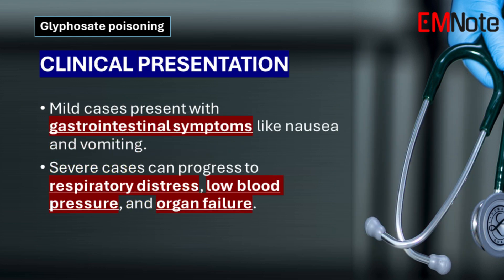The exact mechanism of glyphosate toxicity remains poorly understood. Surfactants likely disrupt cellular membranes and interfere with mitochondrial oxidative phosphorylation. Symptoms of glyphosate poisoning vary depending on the route and amount of exposure. Mild cases may present with nausea, vomiting, diarrhea, and abdominal pain. More severe poisoning can lead to respiratory distress, low blood pressure, metabolic acidosis, kidney failure, and liver injury.